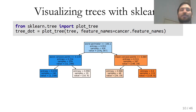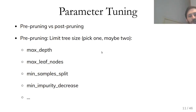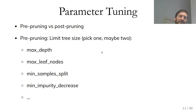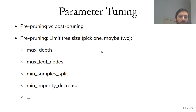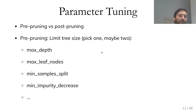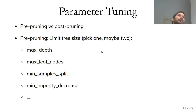Now let's talk about parameter tuning. One parameter is the splitting criterion — for classification it usually doesn't make much difference, for regression it depends on what measure you want to optimize. The really important parameters are those that control tree complexity to prevent overfitting. There are two techniques: pre-pruning, which limits tree size while building, and post-pruning, which first builds the whole tree and then shrinks it back.